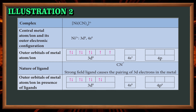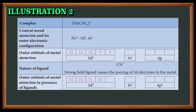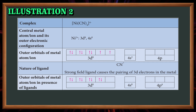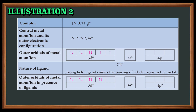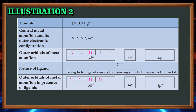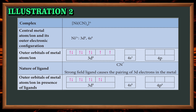Illustration 2: the complex nickel tetracyanide. Central metal ion nickel(2+) has outer electronic configuration 3d8, 4s0. The outer orbitals are 3d8, 4s0, and 4p0. The nature of the ligand cyanide is a strong-field ligand, which causes the pairing of 3d electrons in the metal.